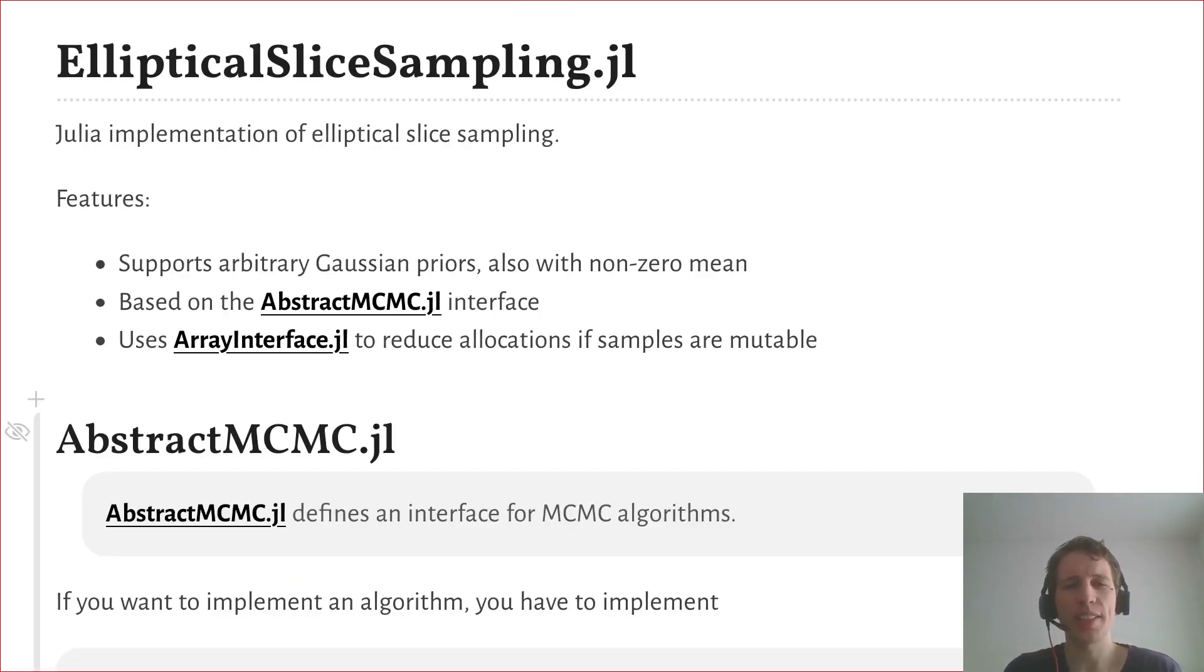Elliptical slice sampling.jl is now a Julia implementation of this algorithm. It also supports non-zero mean Gaussian priors and is based on the AbstractMCMC interface.